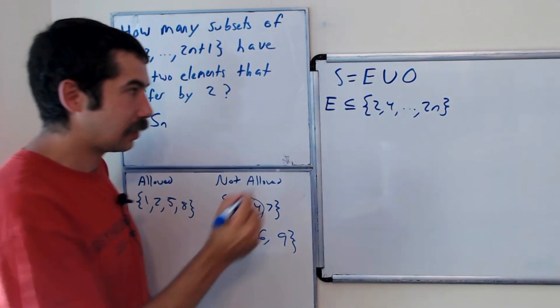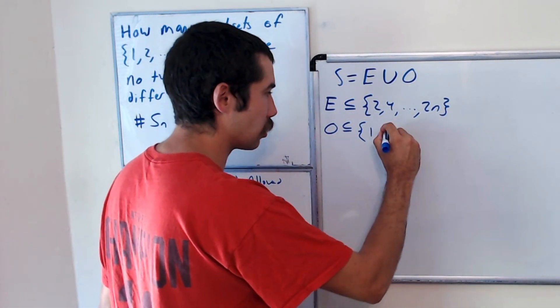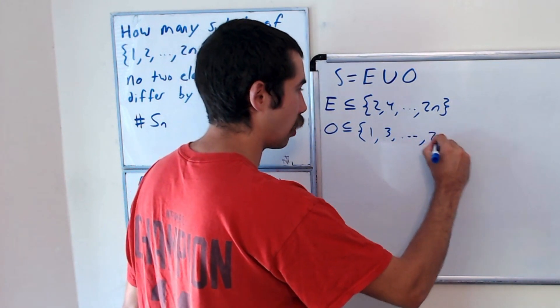And odd, or O, will be a subset of the numbers, well, the odd ones. 1, 3, up to 2N plus 1.